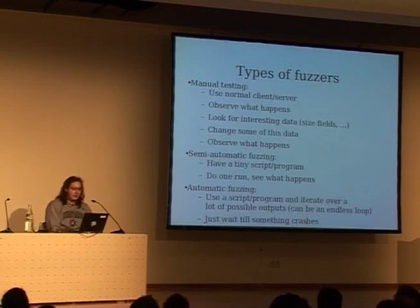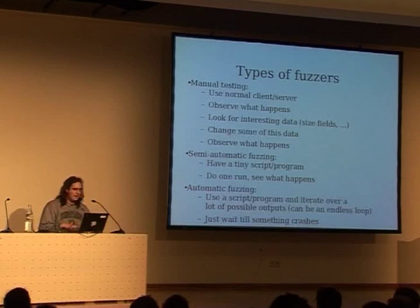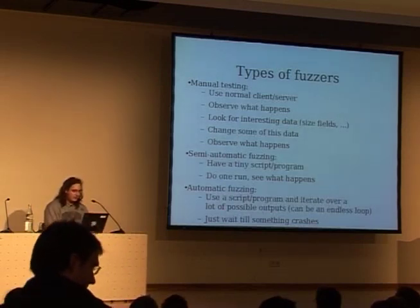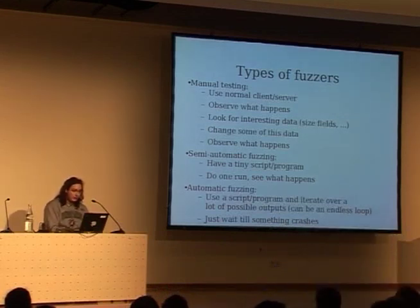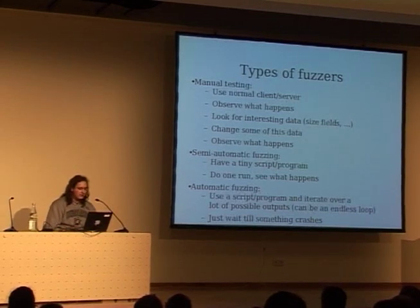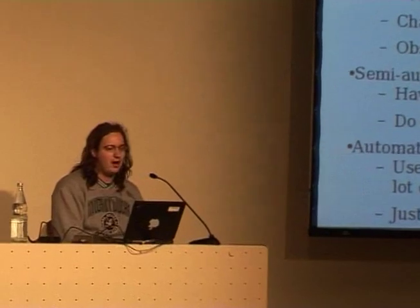There are different kinds of fuzzers. First, manual testing — which isn't really fuzzing, it's usually preparation. You observe data exchanged between client and server or examine a file format, change a few things, run it through the parser, and look for interesting fields like size fields and strings. Then there's semi-automatic fuzzing, where you've done manual testing and have a script that does these things, running one test at a time and examining the results. This is interesting because you can notice very subtle bugs you wouldn't normally find with automated fuzzing.